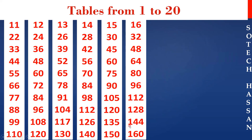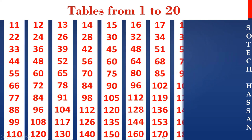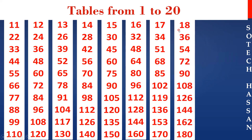16 9s are 144, 16 10s are 160. 17th table: 17 1s are 17, 17 2s are 34, 17 3s are 51, 17 4s are 68, 17 5s are 85, 17 6s are 102, 17 7s are 119, 17 8s are 136, 17 9s are 153, 17 10s are 170.